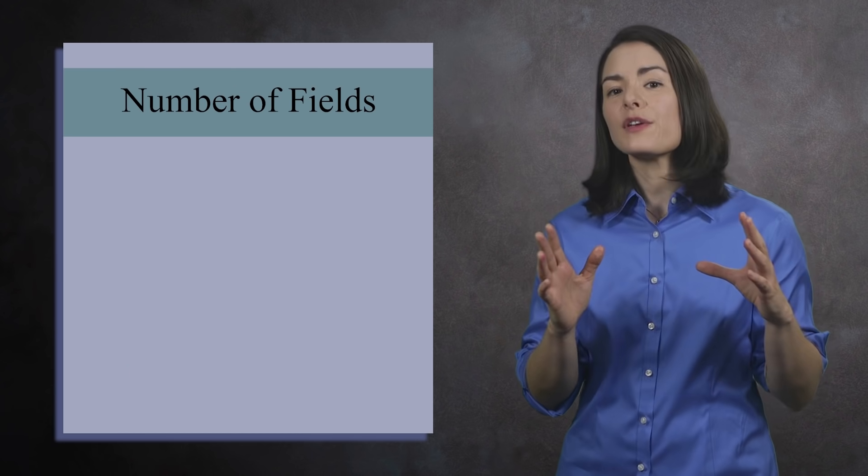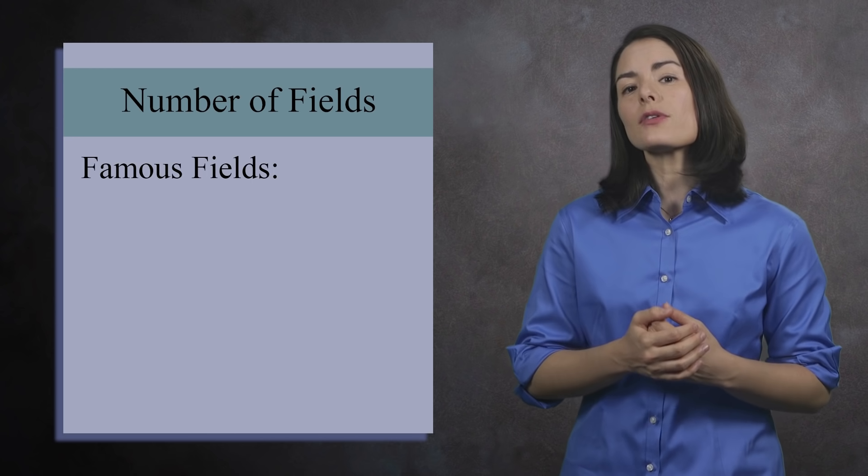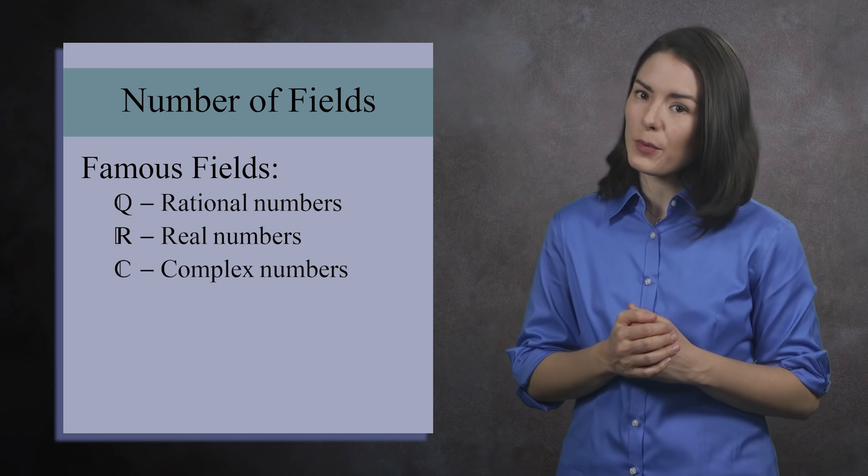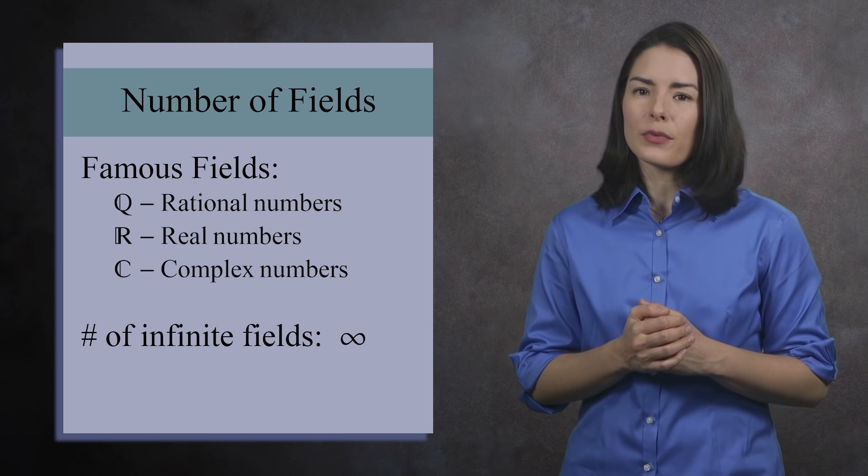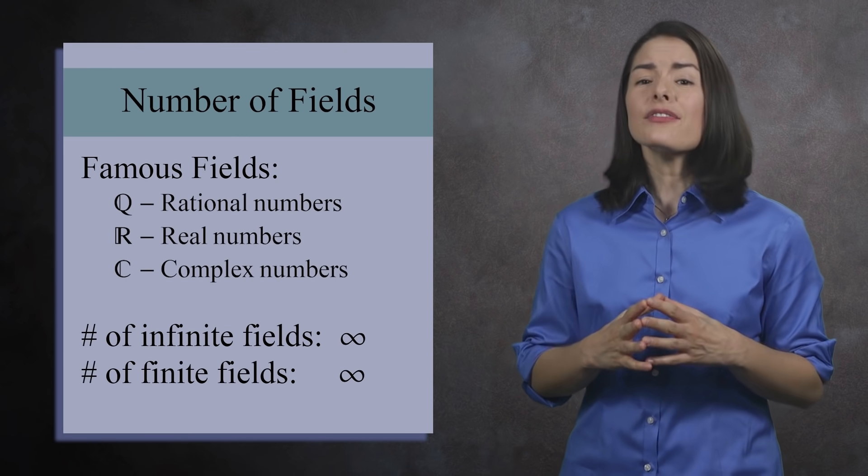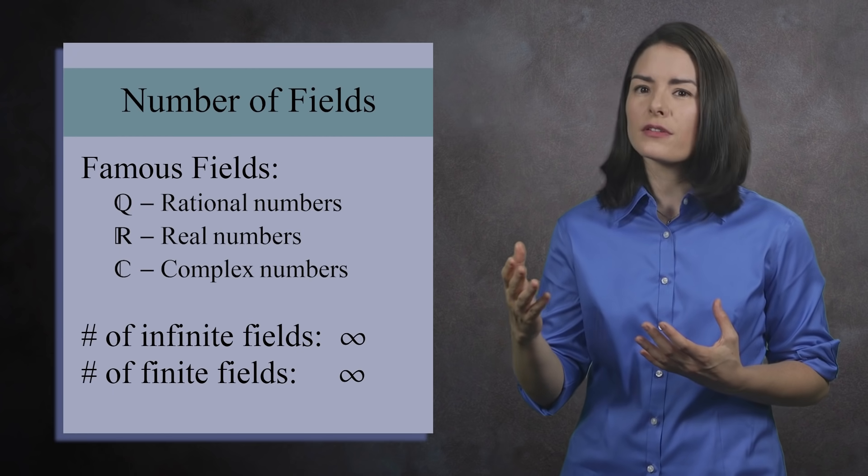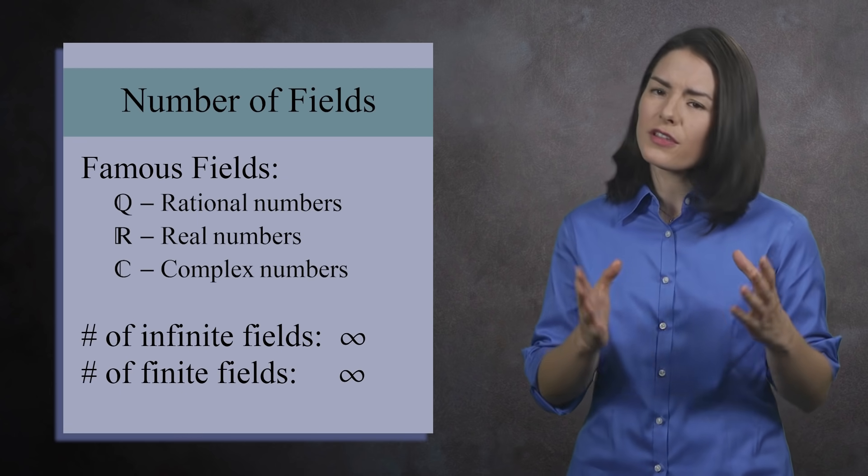There are an infinite number of fields in mathematics. We begin by learning about the big three: the rational numbers, the real numbers, and the complex numbers. But there's an infinite number of infinite fields, and even an infinite number of finite fields. From finite fields to Galois extension fields, you'll find many uses for this structure.